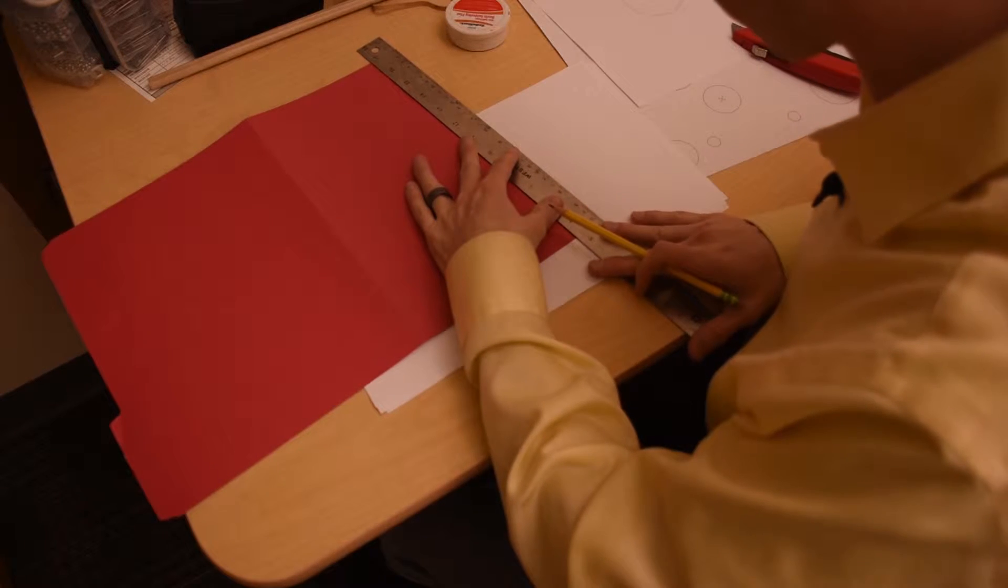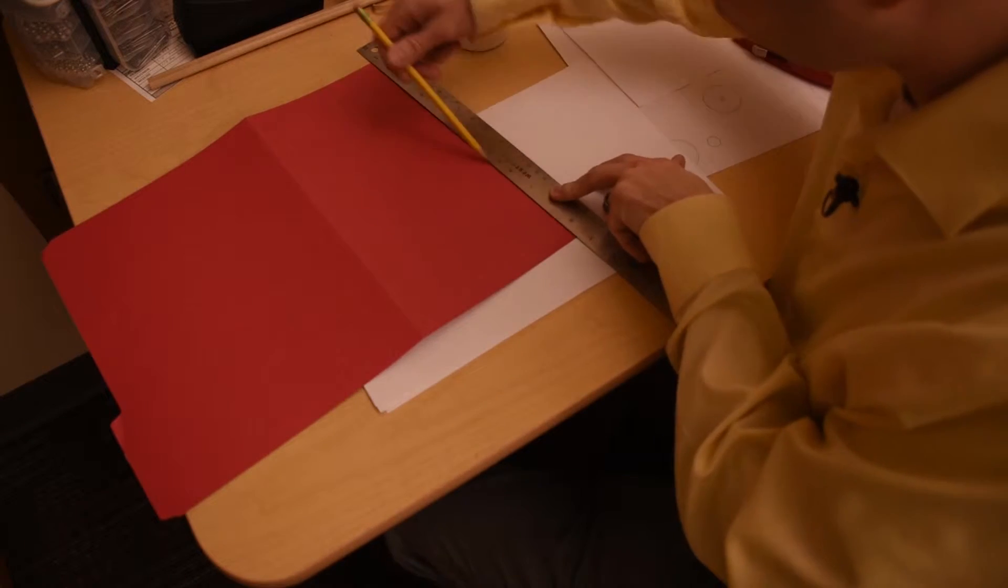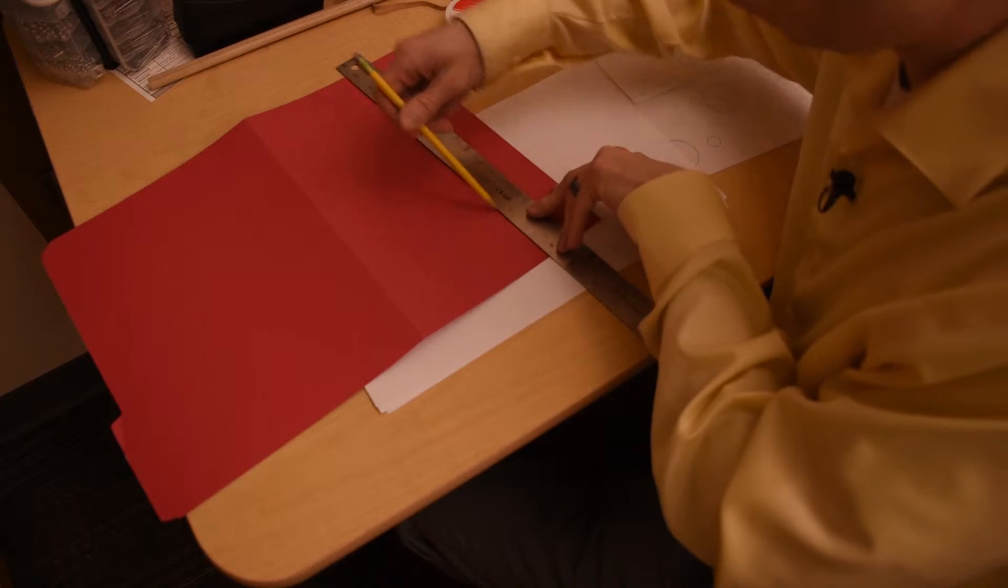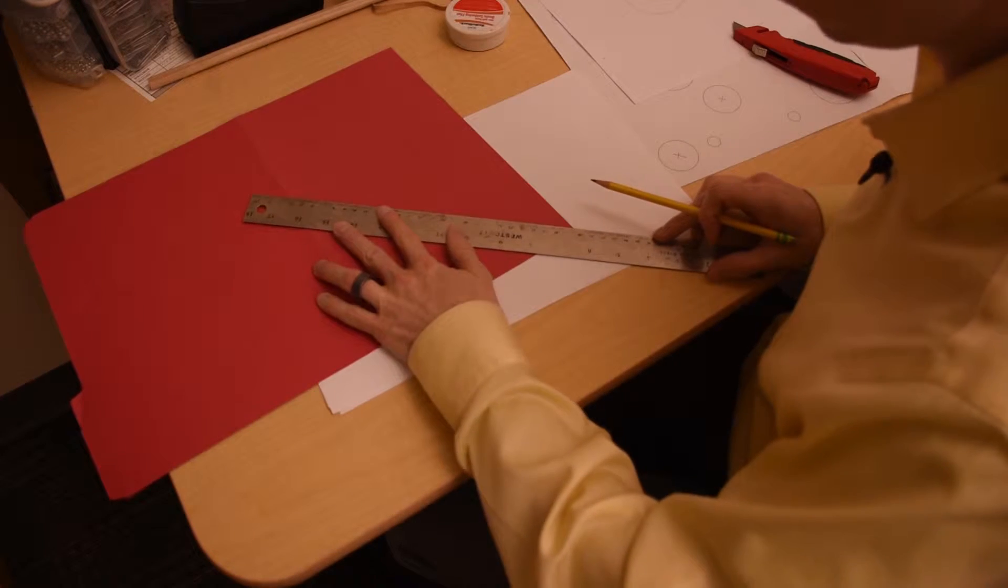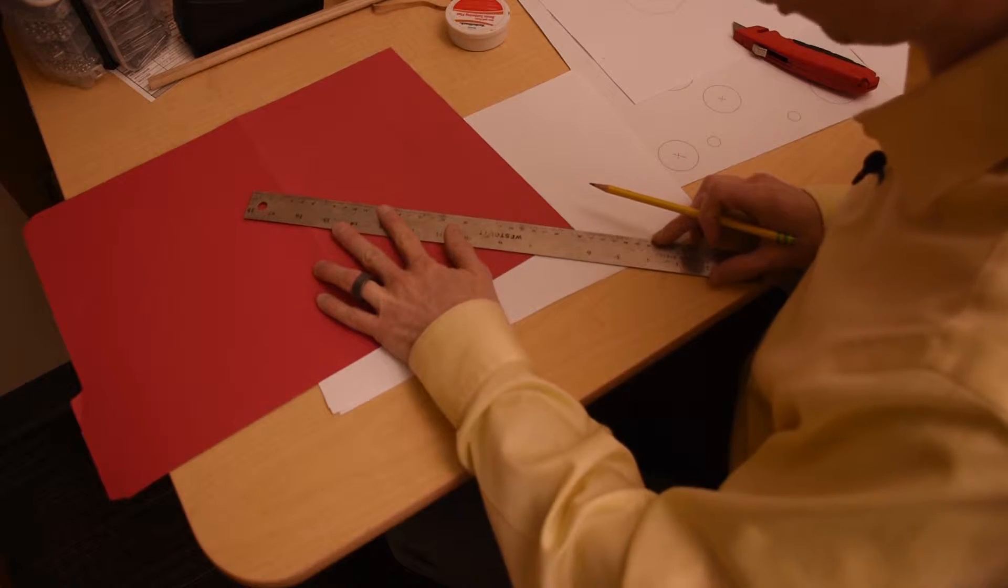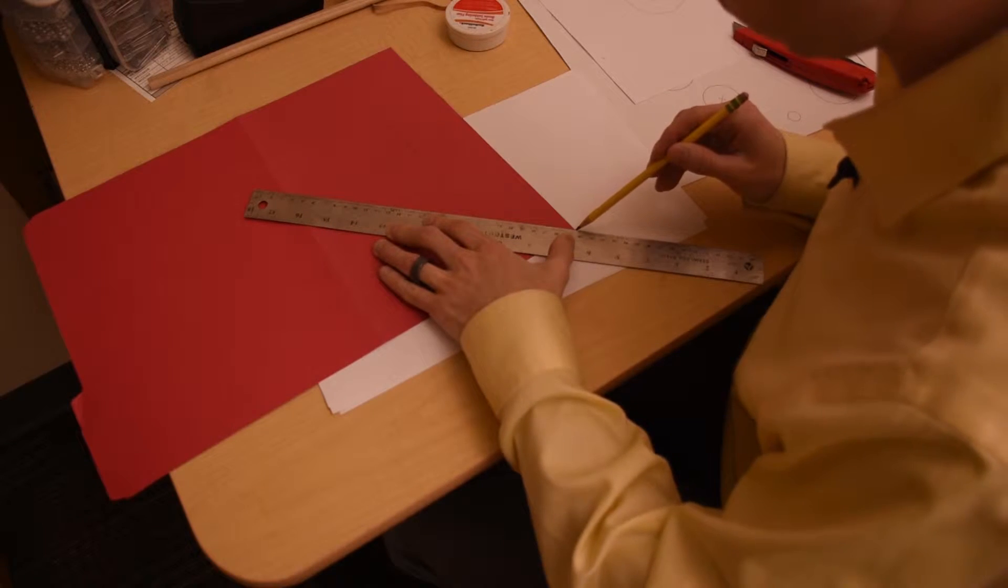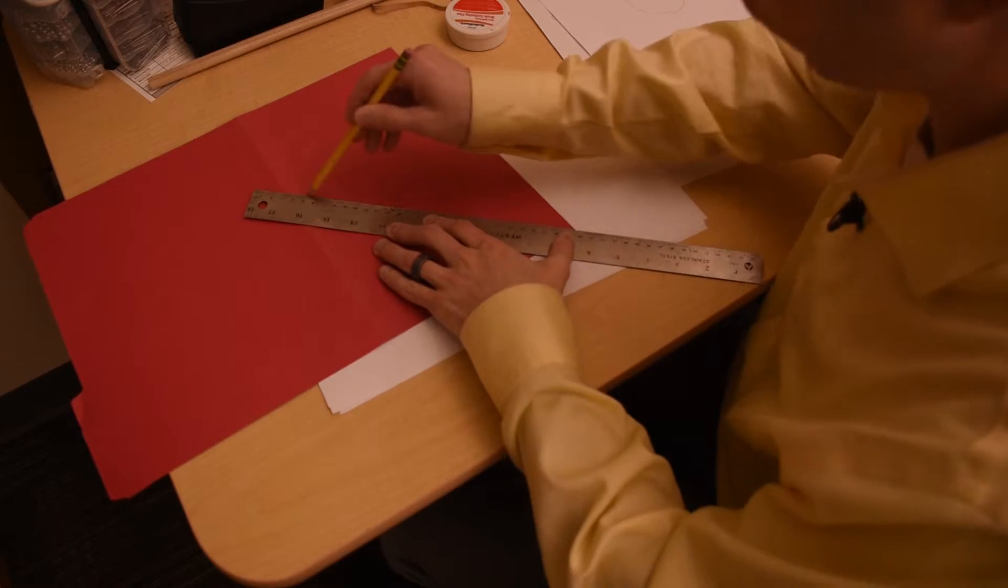We'll go on our other edge and do the same thing. The idea here is we're bisecting this angle in the corner that we just made. So take our straight edge from the corner of your angle through your last crossing lines there.